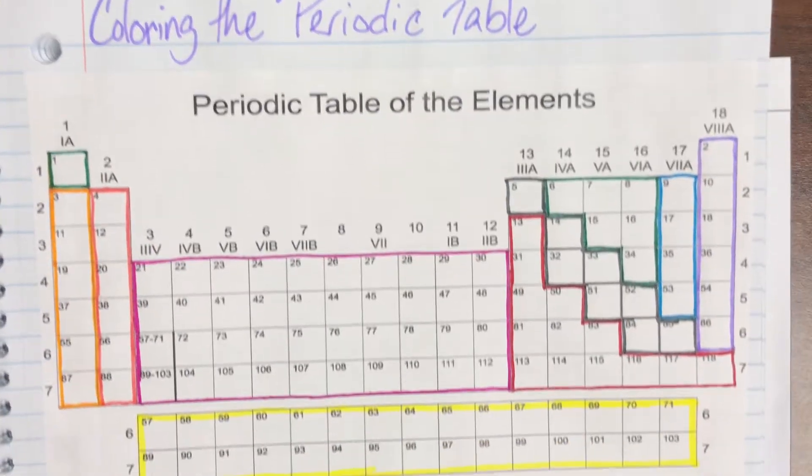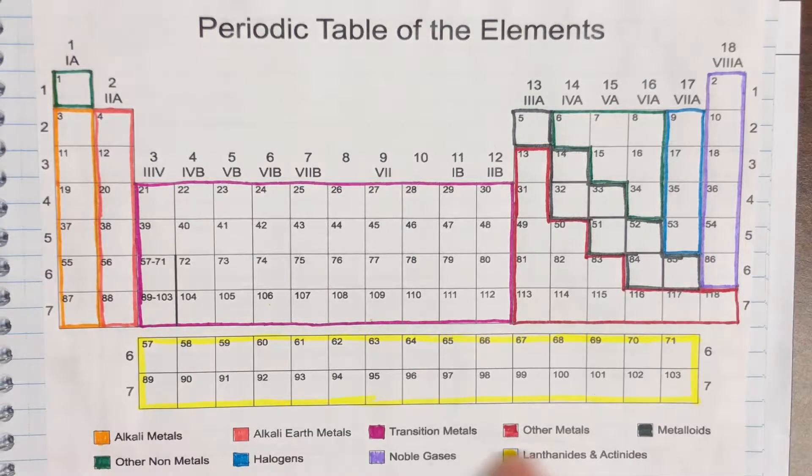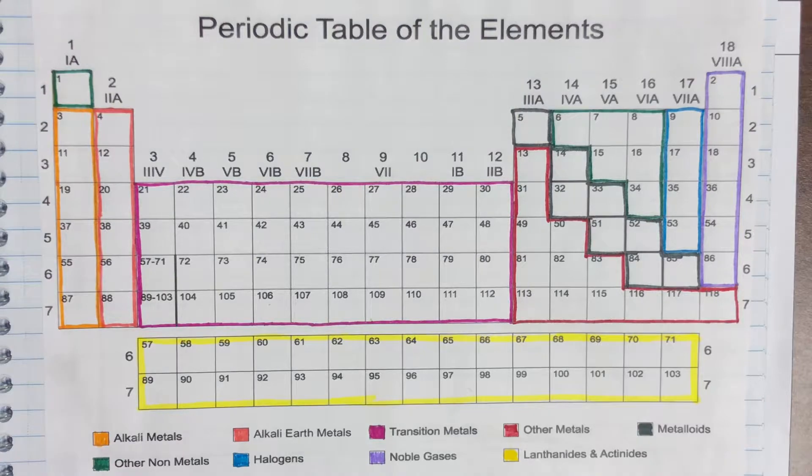We have a blank periodic table here that has some space for each color identifier for what individual family it is.